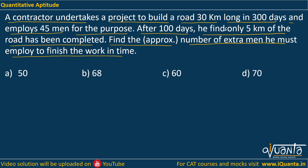In such questions, what we basically do to find out the work is multiply men and days, so that gives us the total work. Men into days — man-days — is the work that we have. Using this relation, if the work is constant, then if you increase the number of men, the number of days decreases. If you decrease the number of men, the number of days required to complete the same work increases.